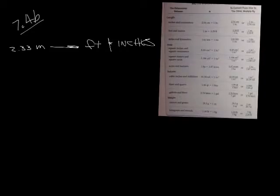What you're going to have to do is decide whether you're going to find it in feet or inches and then go from there. We're only going to do one at a time, so let's go ahead and just find it in feet and then we can deal with the inches later. So what they want is 2.33 is the same as 7 feet 8 inches. Let's change 2.33 meters to feet.